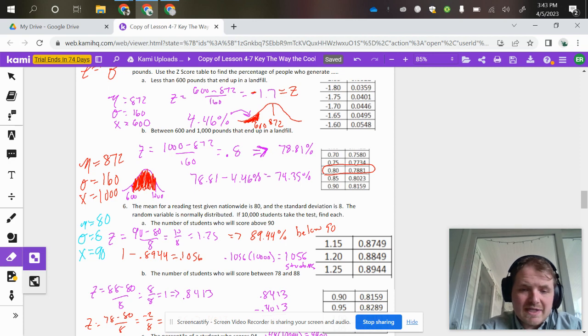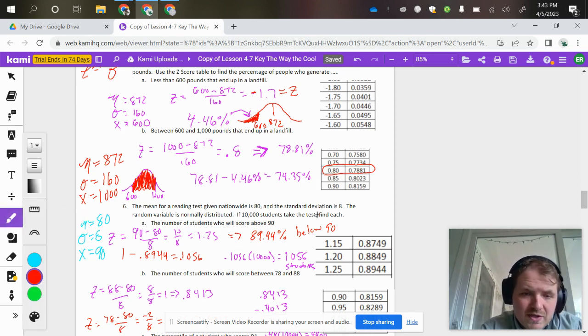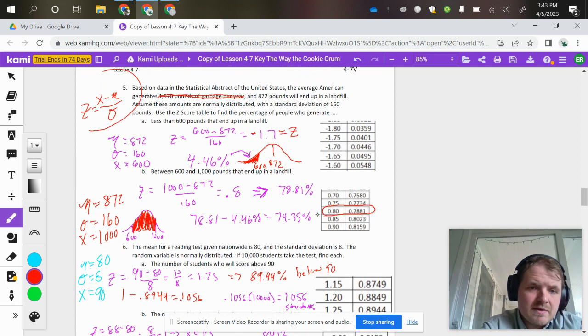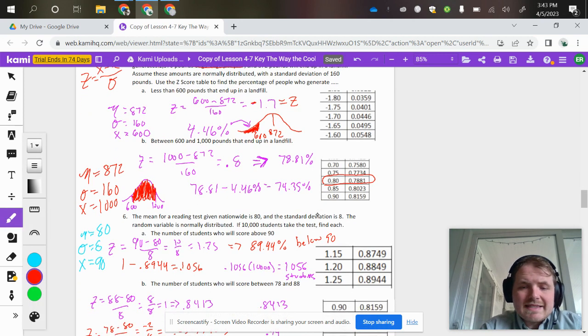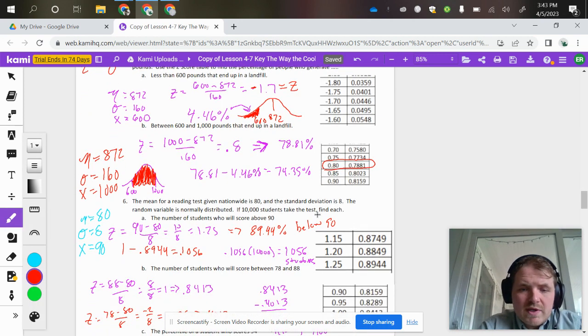So I still want to calculate it like normal. My calculation here, where you do 90 minus 80 all over the standard deviation, this formula up here is going to give you that z-score of 1.25.